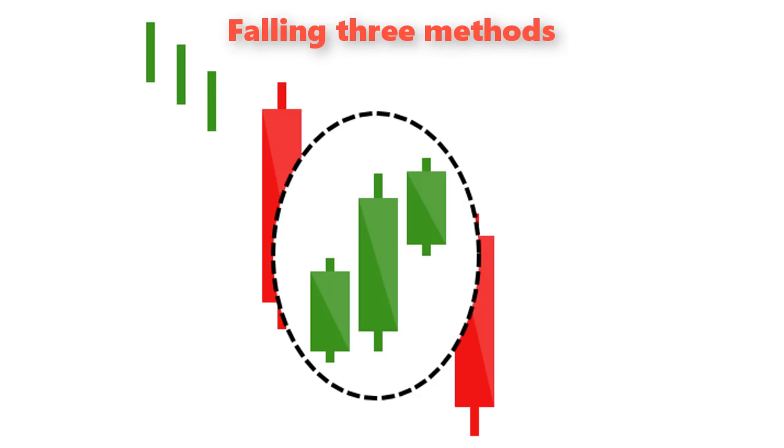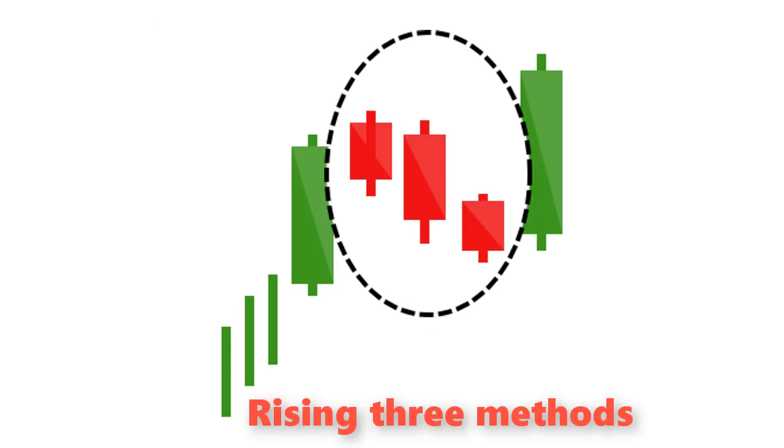Rising Three Methods. The opposite is true for the bullish pattern, called the rising three methods candlestick pattern. It comprises of three short reds sandwiched within the range of two long greens. The pattern shows traders that, despite some selling pressure, buyers are retaining control of the market.